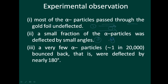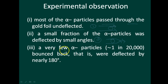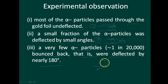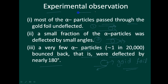Consider this as the gold foil — some alpha particles are deflected at small angles like this. And very few alpha particles bounced back, that is, they were deflected by nearly 180 degrees — they would go toward the foil and come back. This is about the experimental observations of the scattering experiment proposed by Rutherford.